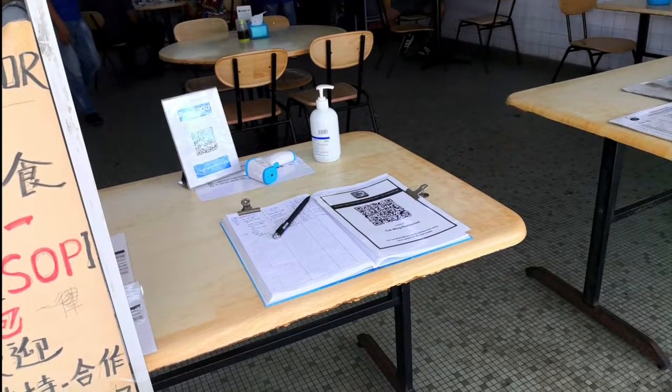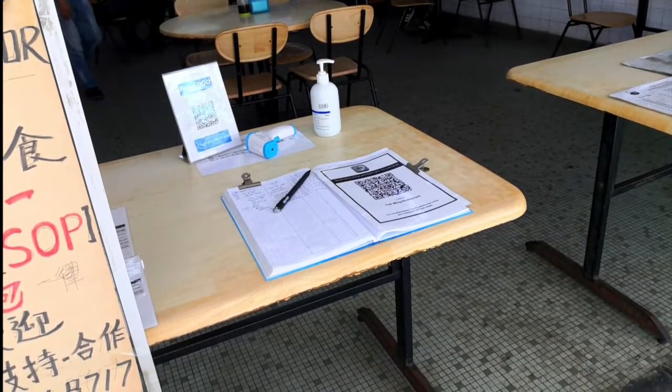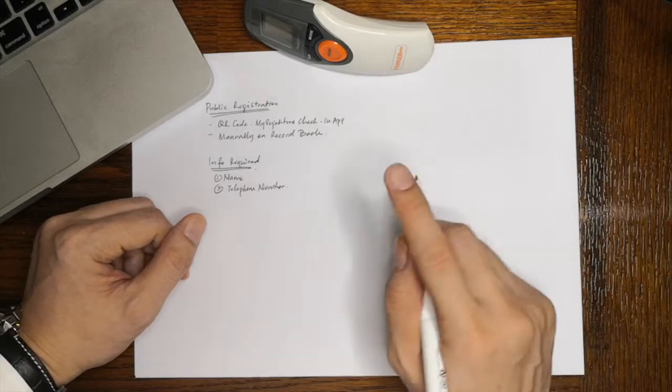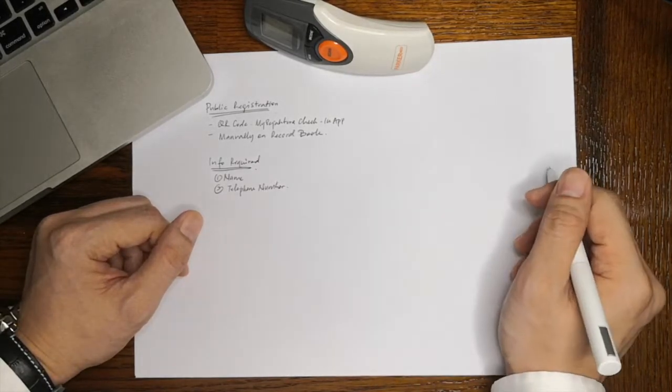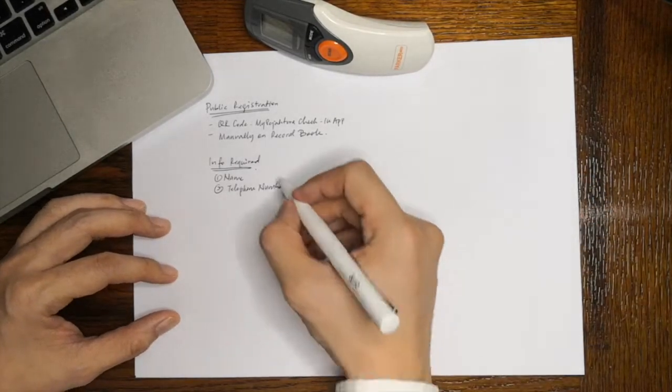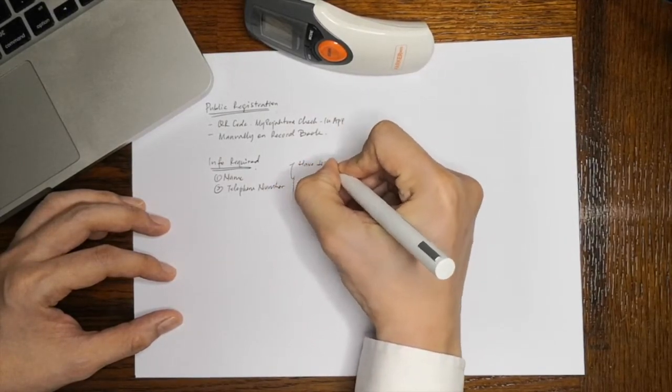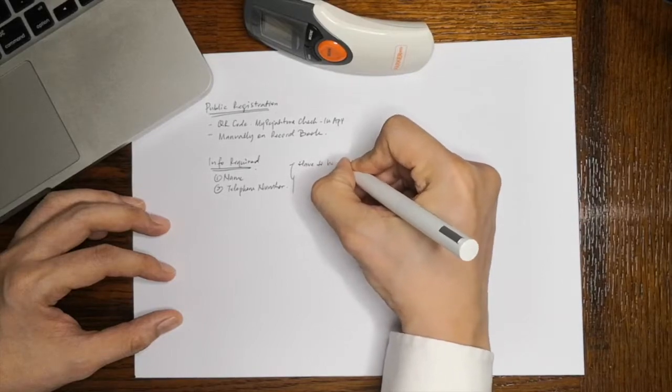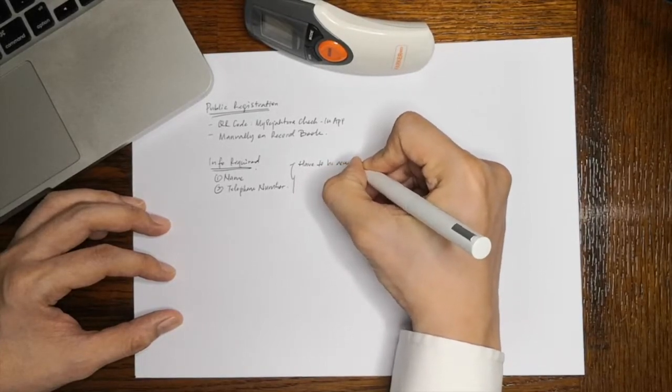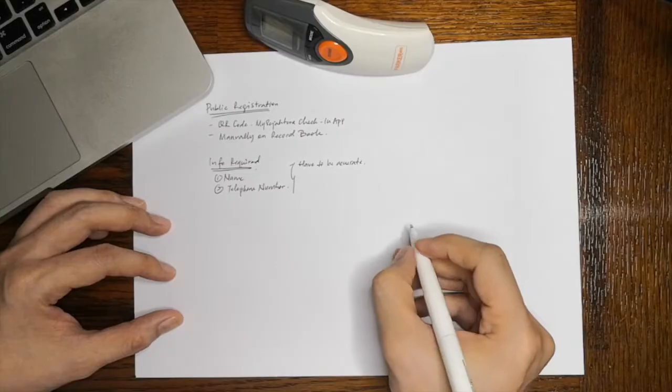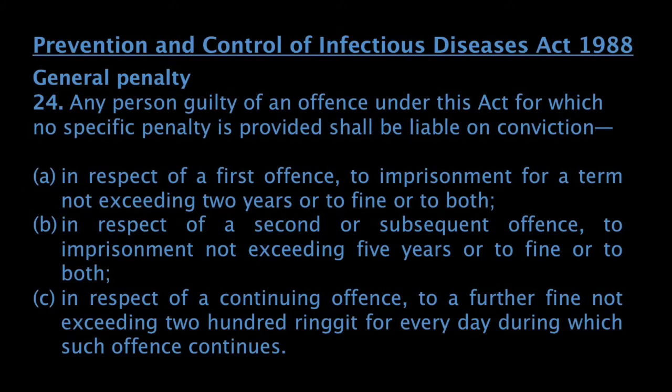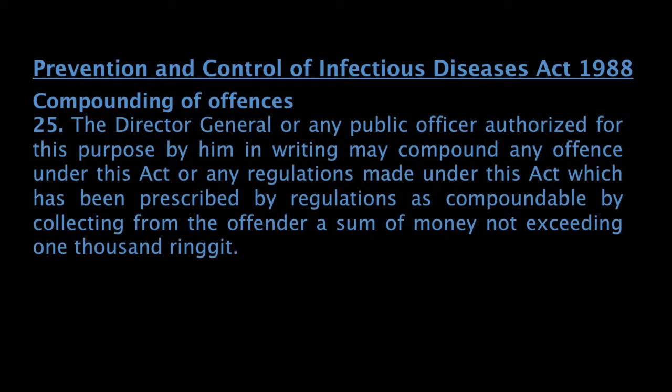Should one then give incomplete particulars or false details? Surely not. It is an offence to provide false information under Section 22 of the Prevention and Control of Infectious Diseases Act 1988 and Section 233 of the Communication and Multimedia Act 1998. The penalty for doing so can be found in Section 24 and 25 of the Prevention and Control of Infectious Diseases Act 1988 and Section 233 sub 3 of the Communications and Multimedia Act 1998.